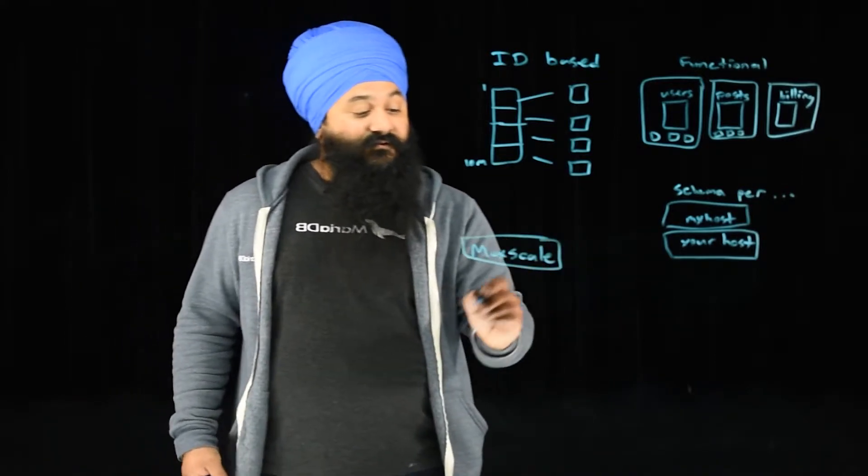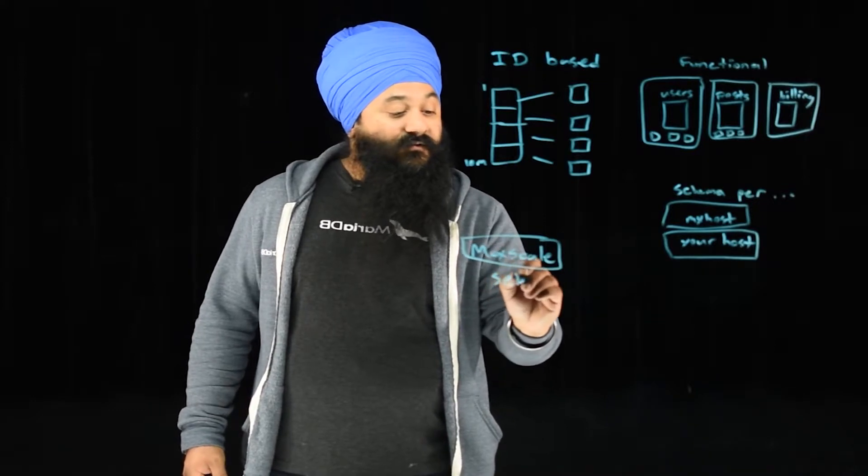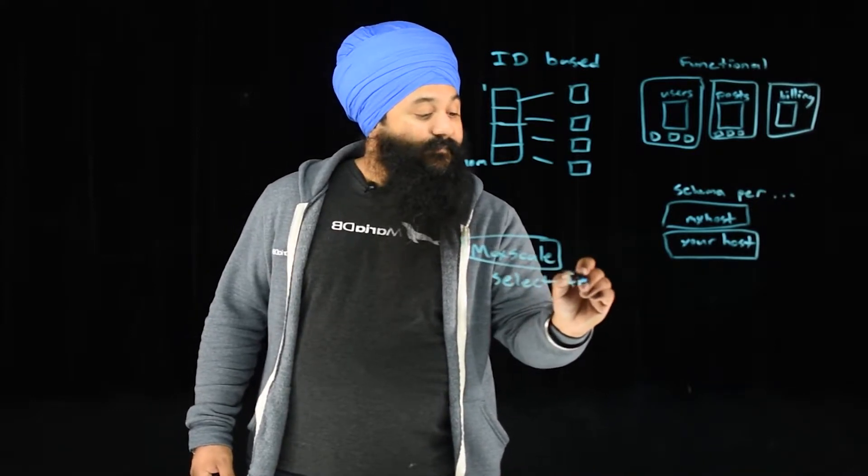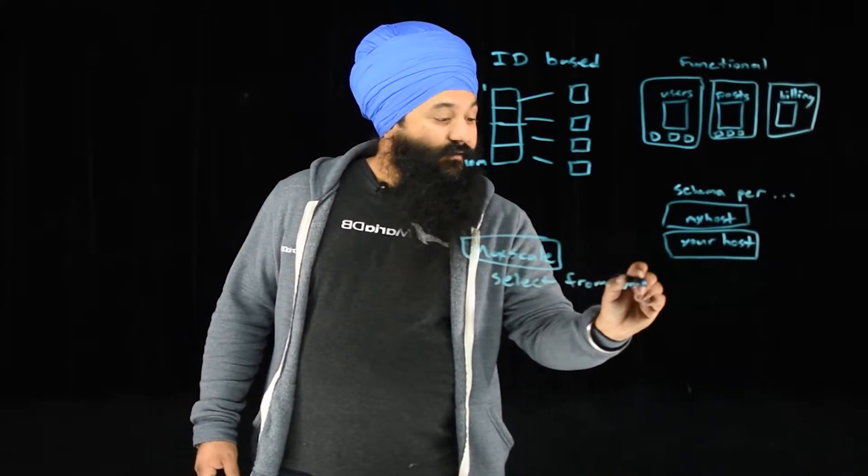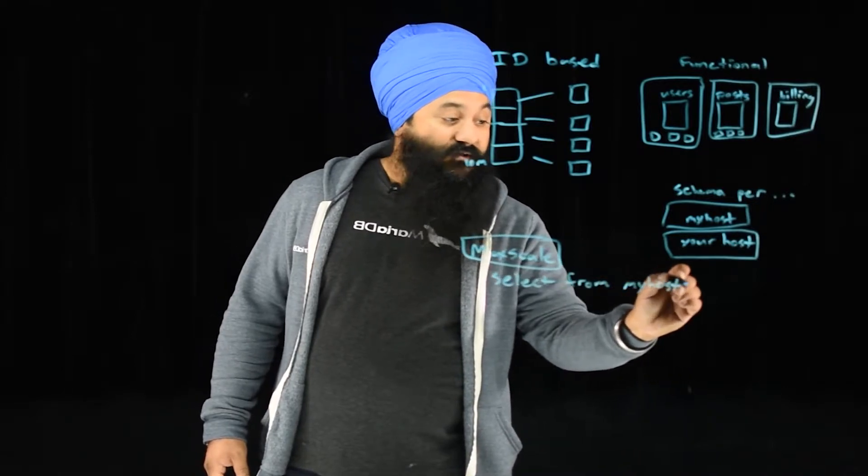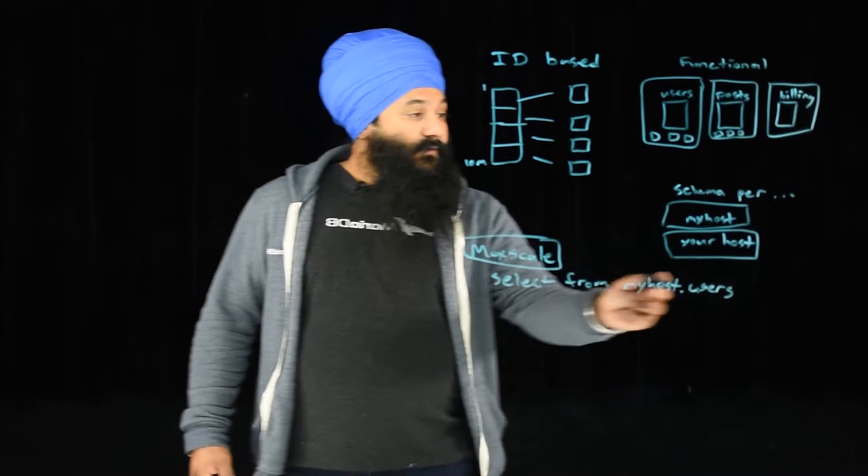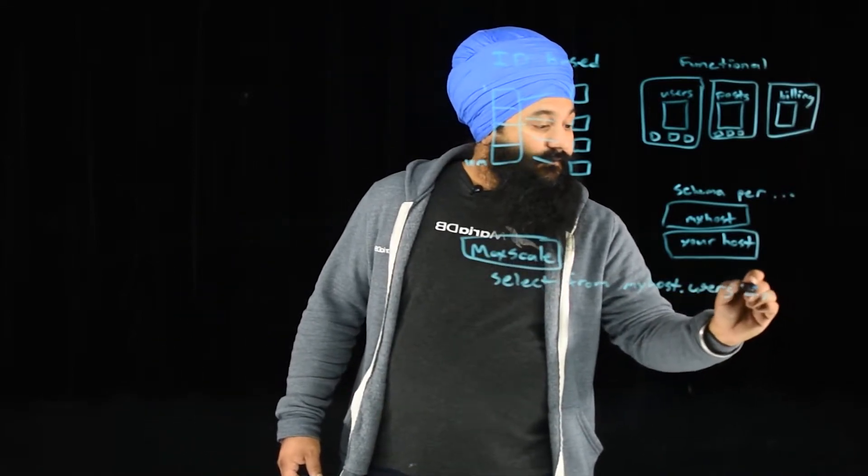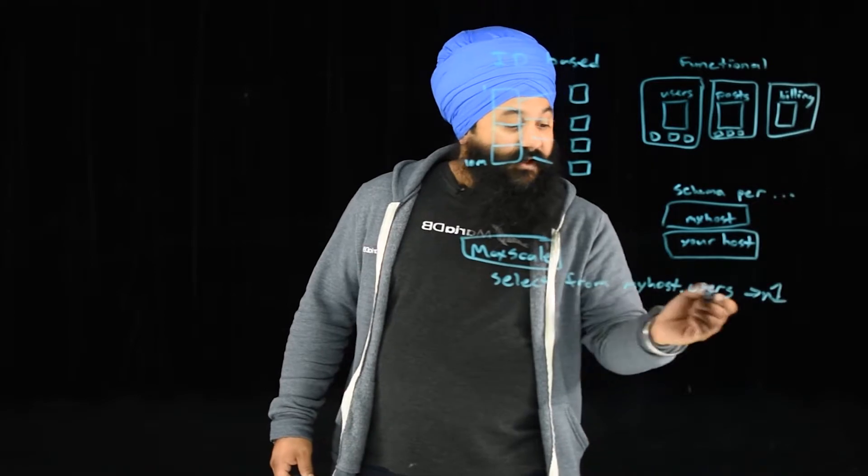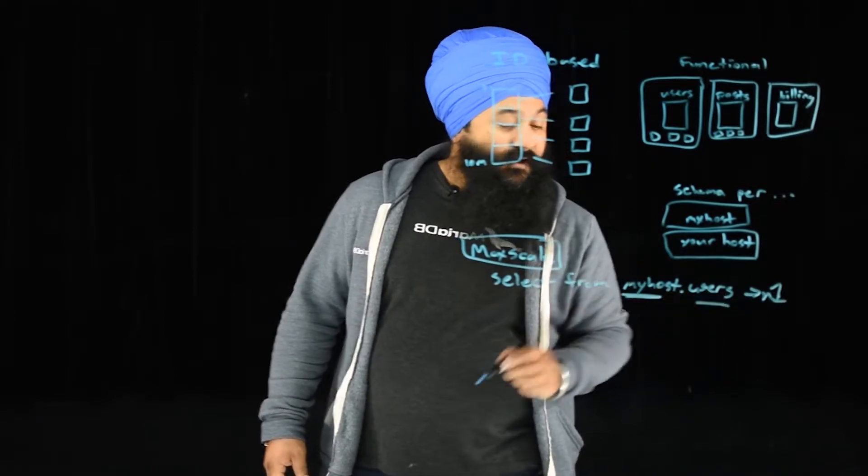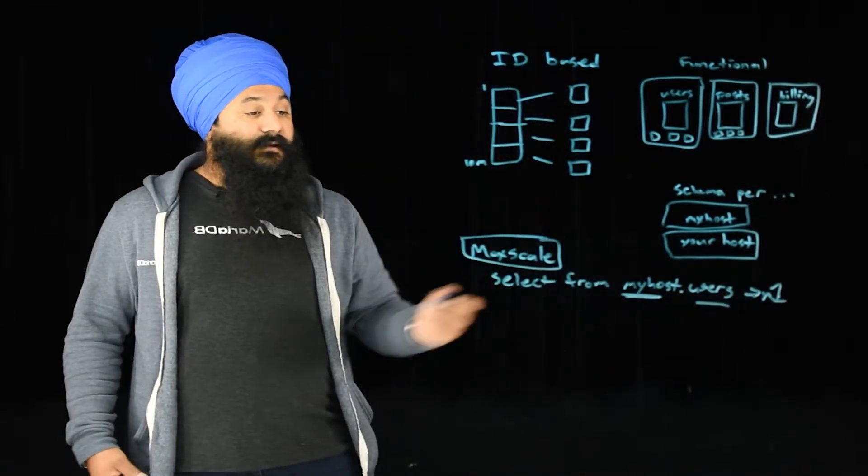So basically what it does is the filter, it'll say, well, your select from myhost.users goes to node one. And so what it does is it'll look at these in the queries and know where they go.